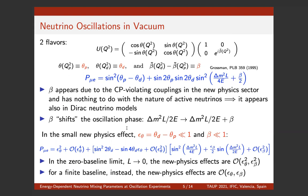If one does the expansion of this expression, in the zero-baseline limit when the terms in the square bracket go to zero, the effect appears at order epsilon squared, whereas if the baseline is finite, terms already appear at order epsilon. One may therefore be tempted to say that finite-baseline experiments are more sensitive than zero-baseline experiments — however, I will return to the zero-baseline experiments in the phenomenology discussion.